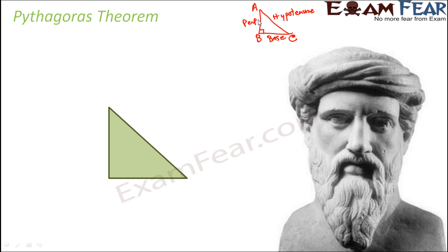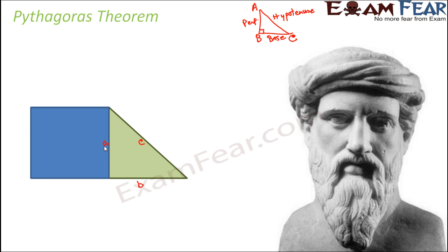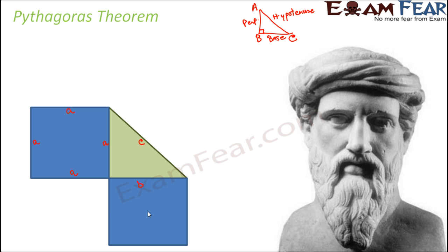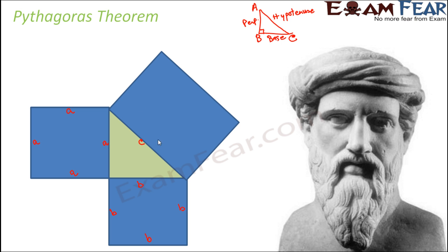Now according to this theorem, let's say you have a right-angled triangle such that the length of the hypotenuse is C, the length of the base is B, and the length of the perpendicular is A. And if we assume that on each of these sides — perpendicular, base, as well as hypotenuse — we draw a square, then the square drawn on the perpendicular has each side equal to A. Similarly, the square drawn on the base has each side equal to B, and the square drawn on the hypotenuse has each side equal to C.